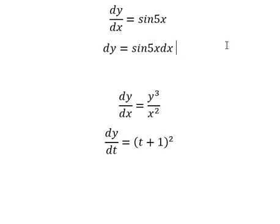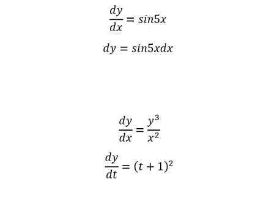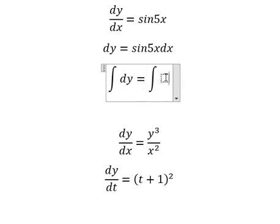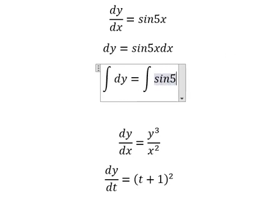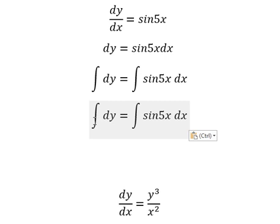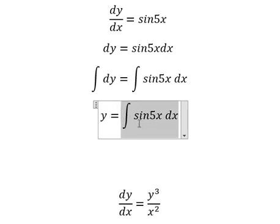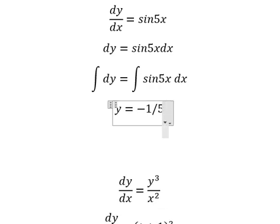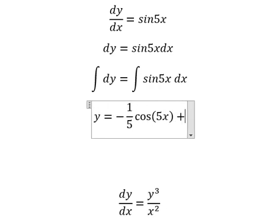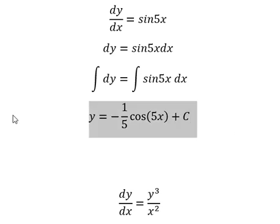Later we put the integration for both sides. So the integration of this one we got y, and the integration of this one we have negative one over five cosine five s, and I will put plus C. This is the answer.